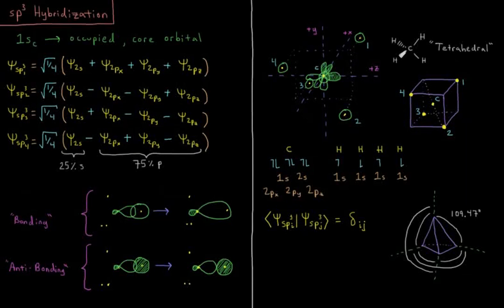This video will discuss sp3 hybridization and polyatomic bonding. Our model of an sp3 hybridized central atom here is going to be the carbon in methane.